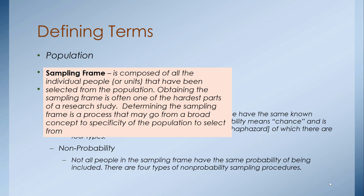The sampling frame is composed of all the individual people or units selected from the population. Obtaining the sampling frame is often one of the hardest parts of a research study. Determining it may go from a broad concept to specificity of the population to select from. Sometimes you have to tweak your population and sampling frame so you get down to those individuals who can actually answer your question.